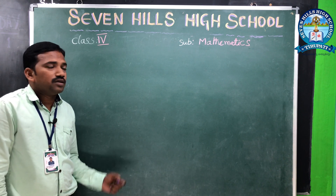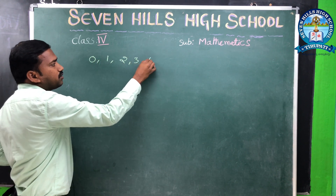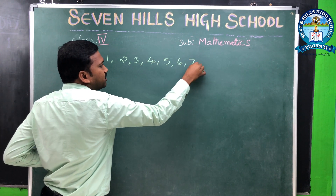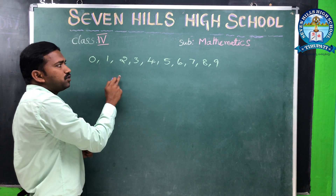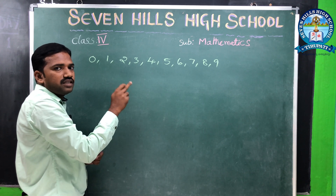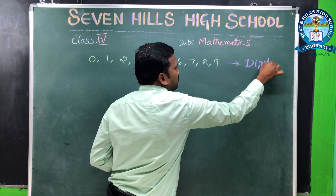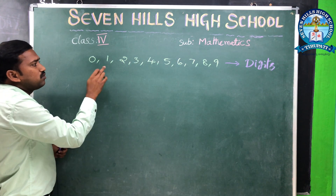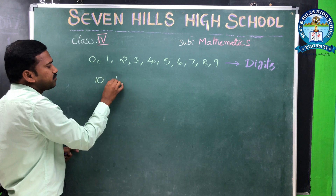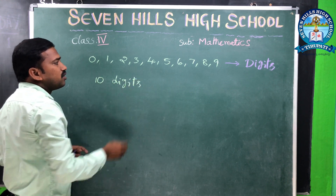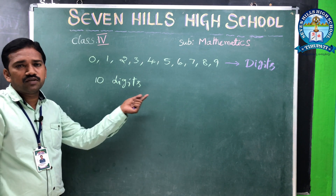In mathematics, the digits are 0, 1, 2, 3, 4, 5, 6, 7, 8, 9. These are called digits. We have 10 digits in total, and by using these digits we can form numbers.